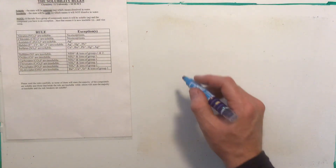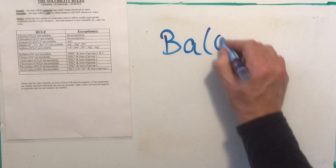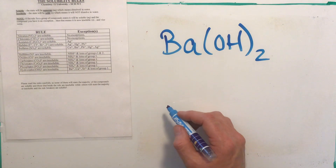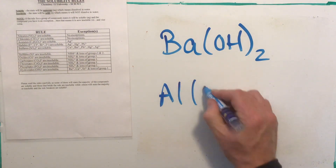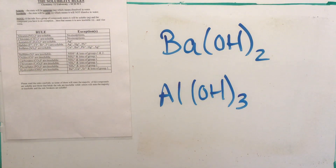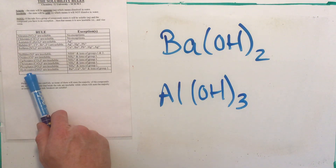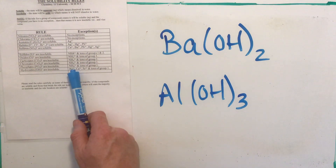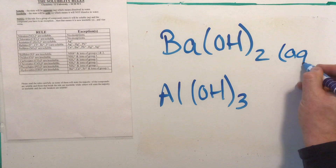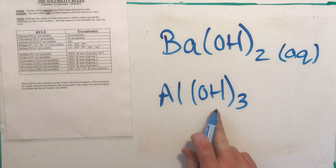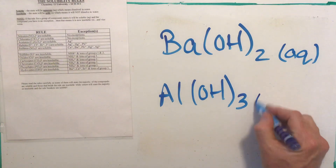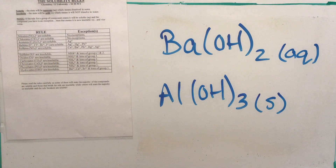Hydroxides — let's do barium hydroxide and aluminum hydroxide. Hydroxides are listed as insoluble at the bottom of the table, so you'd think both are solid. But barium is listed as an exception, so barium hydroxide becomes aqueous. For aluminum hydroxide, hydroxides are insoluble, aluminum is not listed as an exception and is not group one, so the rule stays — aluminum hydroxide is a solid.